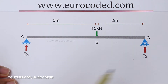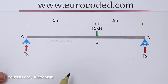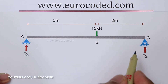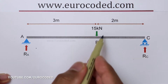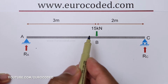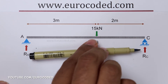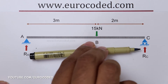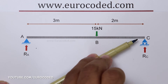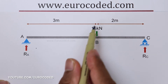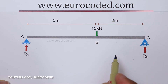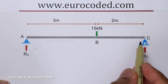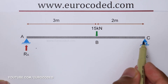Back to the example — now let's move the point we take moments about to point C. If we take moments about point C, then this externally applied force of 15 kN would try to rotate this beam in an anticlockwise direction about point C. Therefore, the same force would result in an anticlockwise moment when we take moments about point C.